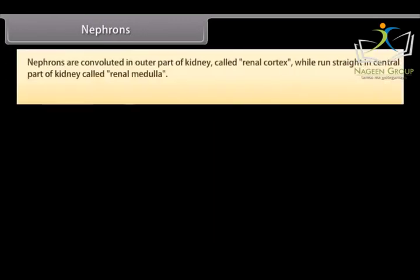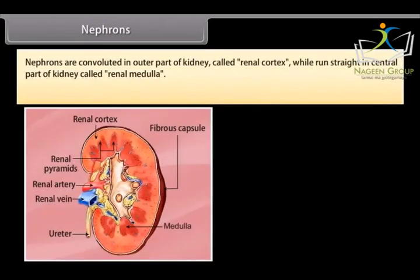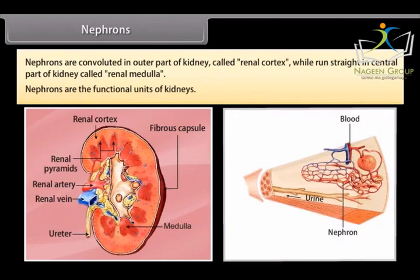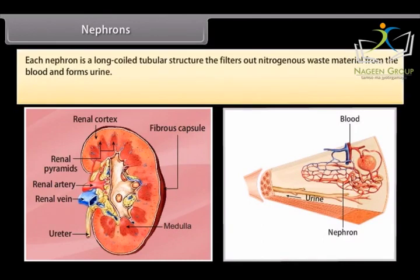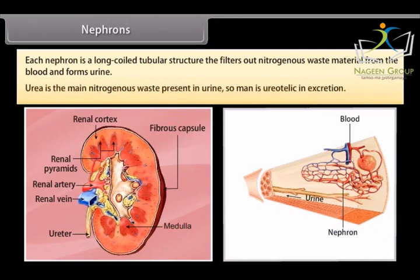Nephrons are convoluted in the outer part of the kidney called the renal cortex, while they run straight in the central part called the renal medulla. Nephrons are the functional units of kidneys. Each nephron is a long, coiled tubular structure that filters out nitrogenous waste material from the blood and forms urine. Urea is the main nitrogenous waste present in urine, so man is ureotelic in excretion.